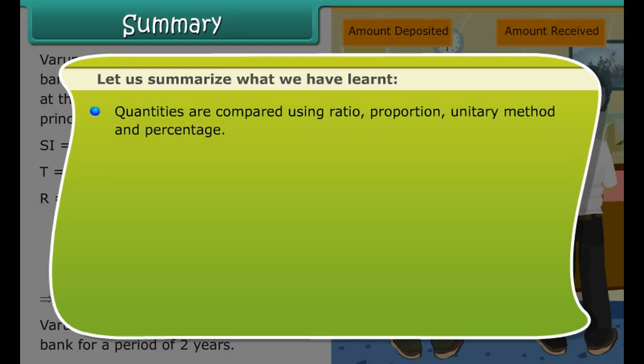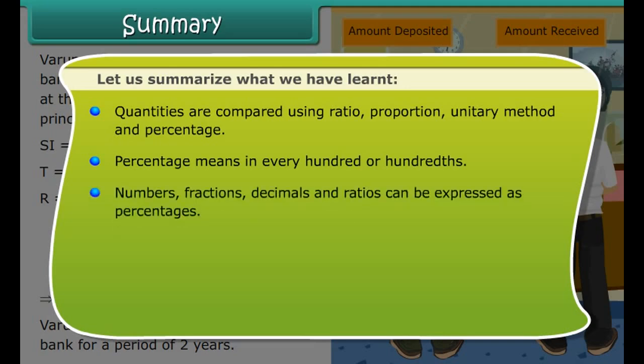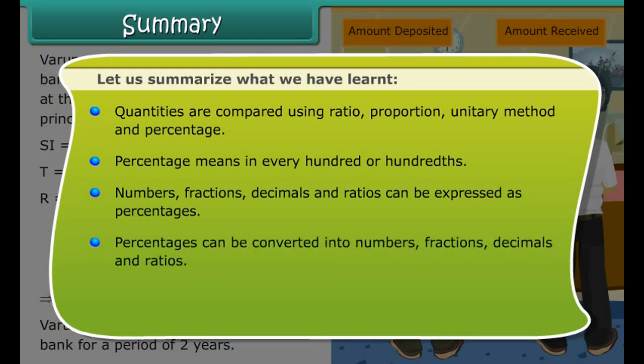Summary. Let us summarize what we have learned. Discount is a reduction given on marked price. Discount equals marked price minus sale price. Discount can be calculated when discount percentage is given. Discount equals discount percentage of marked price.